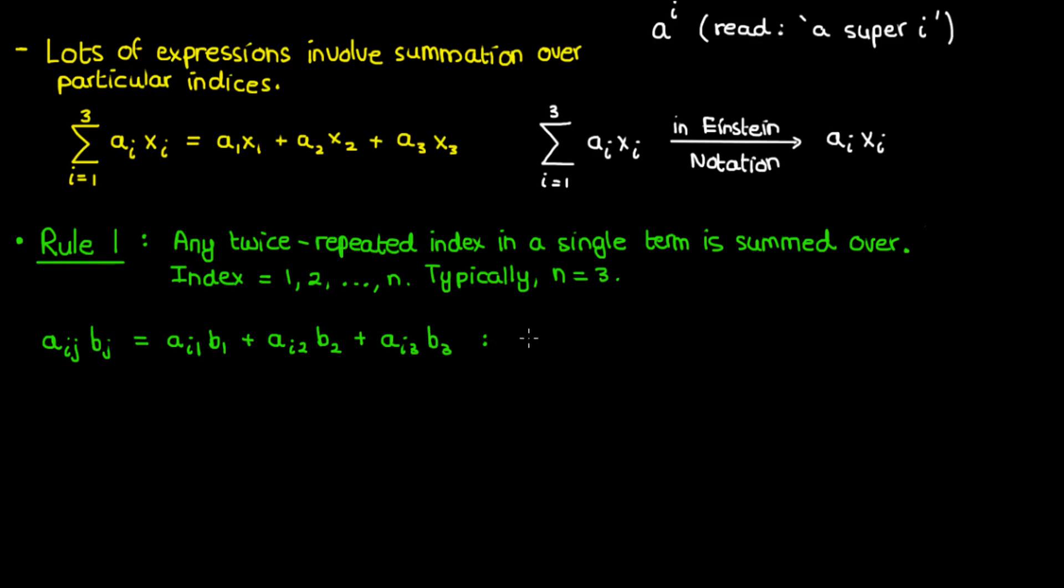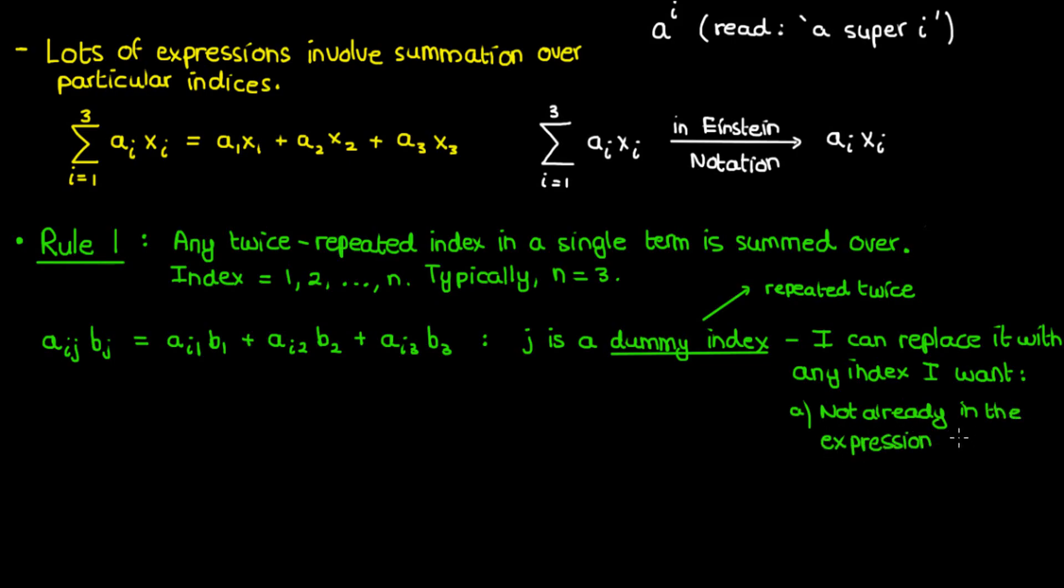Now just a couple of things to go over here. The first is that the index that is summed over, in this case the index j, is called a dummy index. A dummy index is an index that is repeated twice in a term, and I can replace a dummy index like j with any letter or index that I want, as long as that letter or index satisfies two conditions. The first is that the letter or index cannot already be in the term I have, so I can't replace my dummy index j by i. The second condition is that the replacement index is also defined over the same range that the original dummy index is defined over, so in this case from 1 to 3. So for example, another way I could write aij times bj would be to replace j by something like r, so I'd get a sub ir times b sub r, where r varies from 1 to 3. This replacement, because it satisfies both of these conditions, is valid.